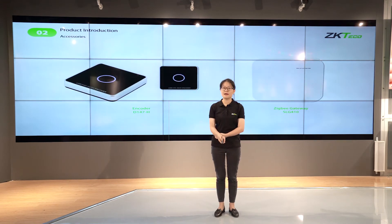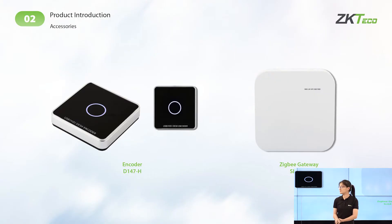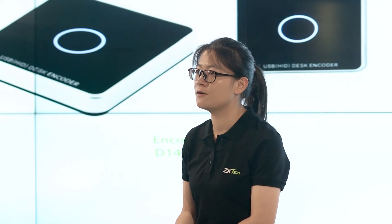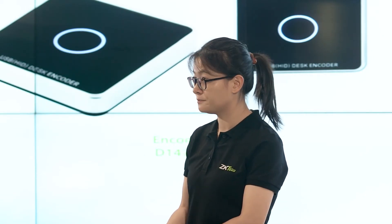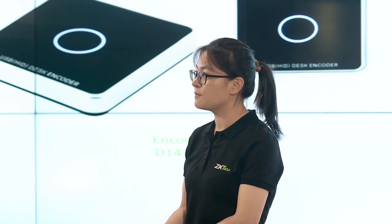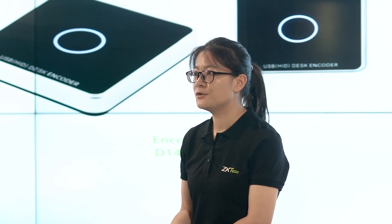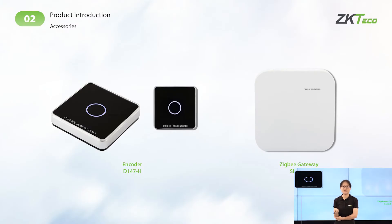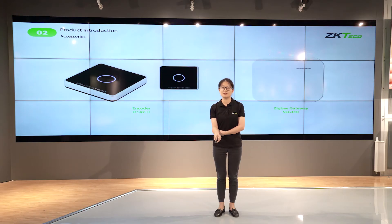Next are the accessories needed for the whole solution. The first one is the decoder, which you may need for issuing cards for backup or emergency use. The next one is the ZigBee gateway, which we call SLG410. With ZigBee communication, you can connect up to 10 locks within 20 meters at one time.